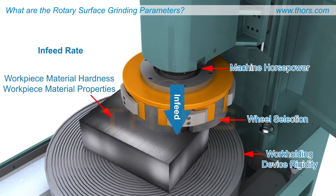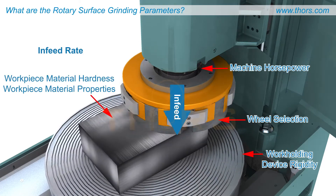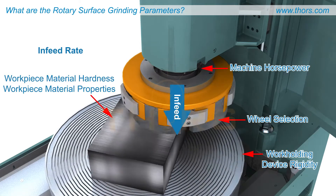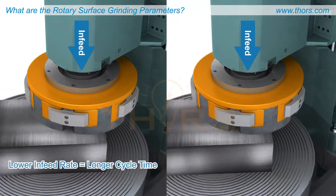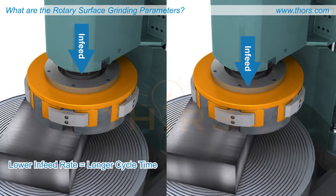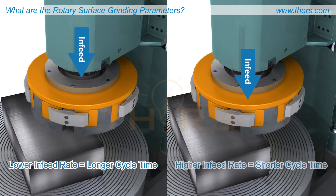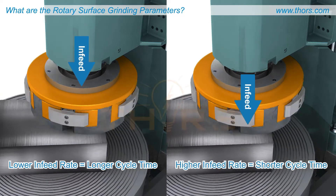Changes to the infeed rate will also affect the cycle time. The lower the infeed rate, the longer the cycle time. The higher the infeed rate, the shorter the cycle time.